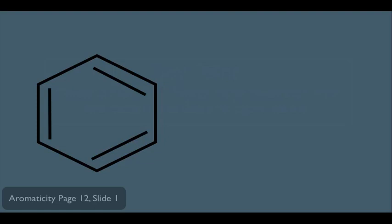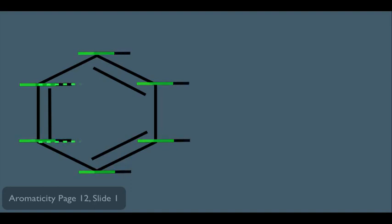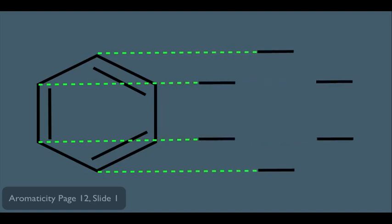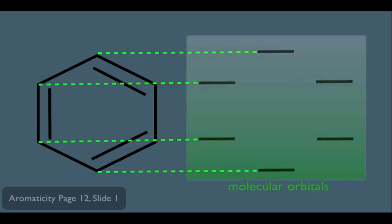For benzene, how do we know its molecular orbital description? All you do is take benzene and represent each carbon in the benzene ring as a molecular orbital like this. Let's bring this diagram over to the side — these right here would be the molecular orbitals of benzene.